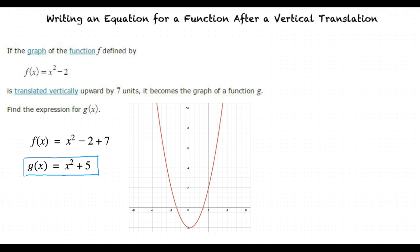In order to translate this function vertically upwards 7 units, we need to take each point on this original graph and move it up 7 units. So that the graph of our transformed function, g(x) = x² + 5, looks like this.